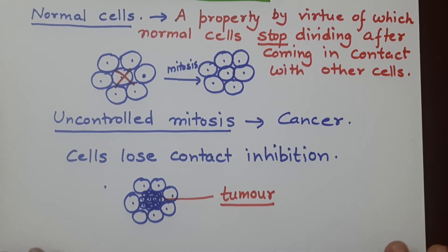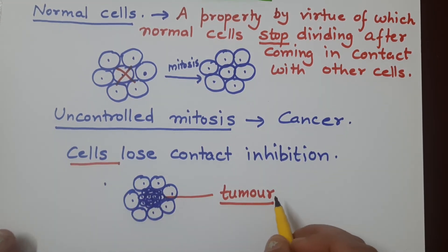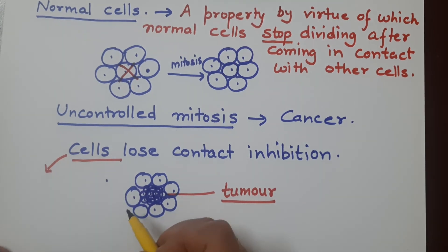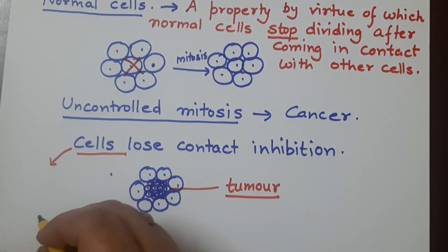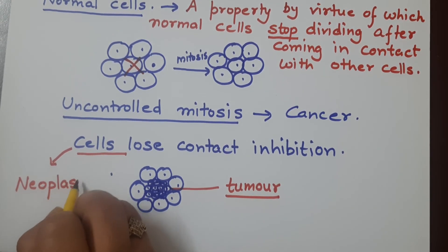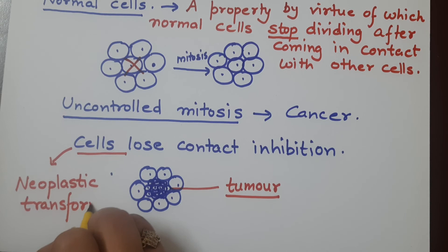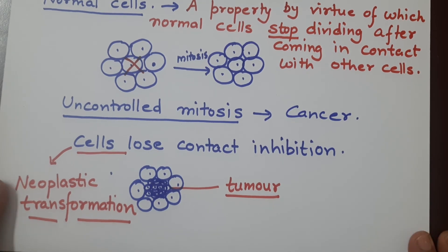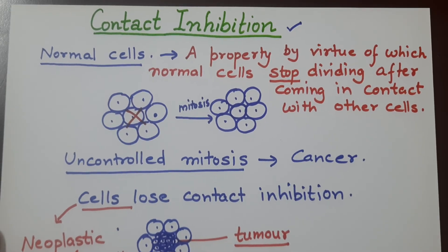So contact inhibition is found in normal cells, but cells which lose this property of contact inhibition become cancer cells. This transformation of cells from normal to cancer cells is known as neoplastic transformation. On losing this property they become cancerous cells. This is what contact inhibition means. Thanks for watching.